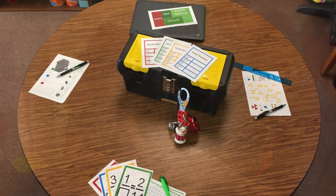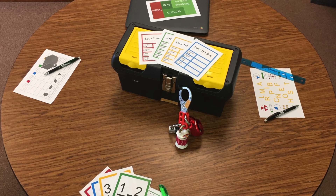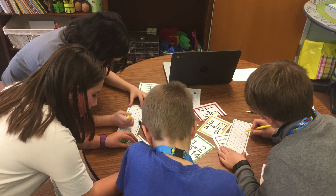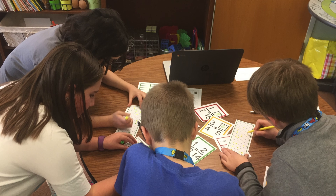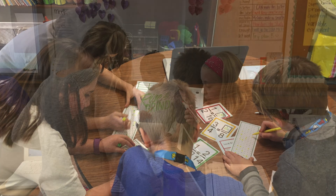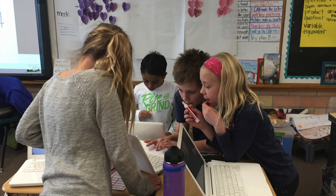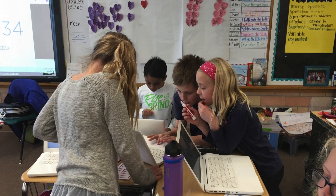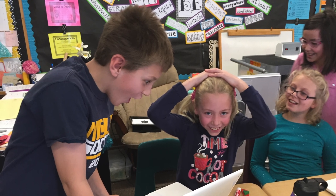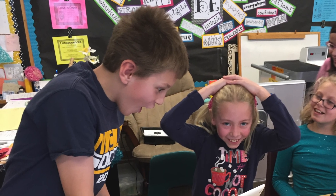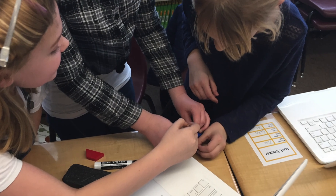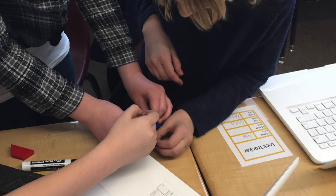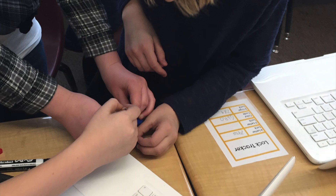Place the hasp on the box and attach the four locks. Next, divide students into four groups and instruct them to either move to a station or to get their computers and sit with their group members. Either way, encourage them to work together to solve the problems. Remind them to record their solutions — in other words, the combinations — on the lock tracker sheet.